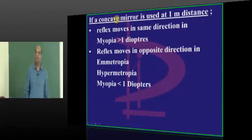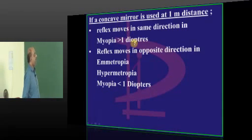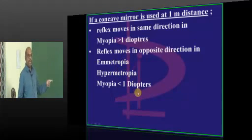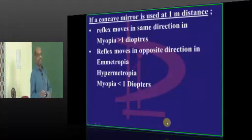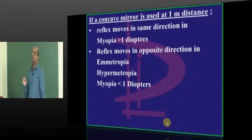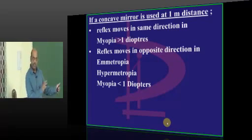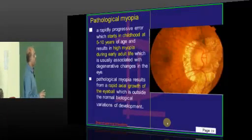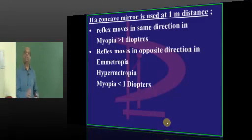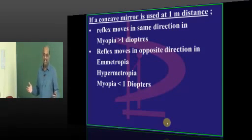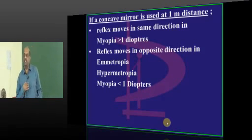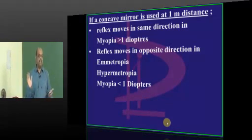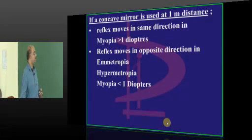With a concave mirror, if the reflex moves in the same direction, then myopia is more than 1 diopter. If it moves in the opposite direction, it can be a normal person, hypermetropic, or myopia less than 1 diopter. If an MCQ comes about retinoscopy findings in myopia, you should answer confidently.